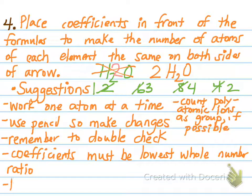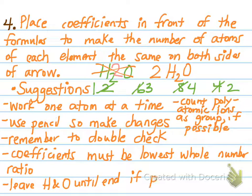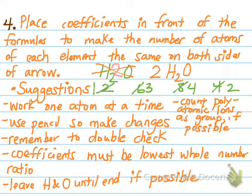When working one atom at a time, count polyatomic ions as a group if possible. If you have a sulfate ion as a reactant and a sulfate ion as a product, don't count that as sulfur and oxygen separately — count it as sulfate ions. It'll be a lot quicker and easier. Lastly, leave hydrogen and oxygen until the end if possible. Oftentimes, particularly in combustion reactions, hydrogen and oxygen are the most difficult atoms to balance, and if you start somewhere else, by the time you get to them they may already be balanced.